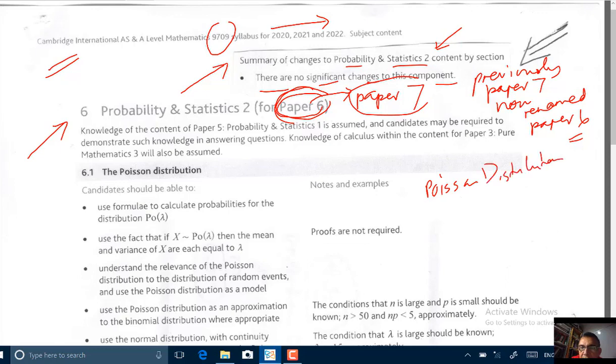And then you'll be dealing with a linear combination of random variables. And then you'll be looking at continuous random variables. And then you'll be looking at sampling and estimation. And finally, you'll be looking at hypothesis testing.